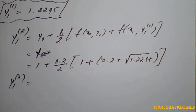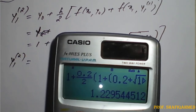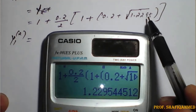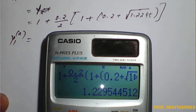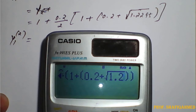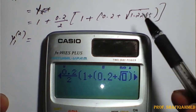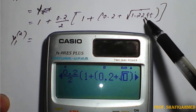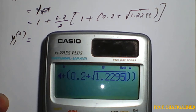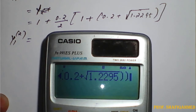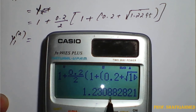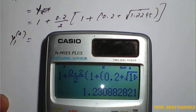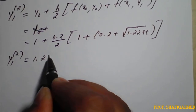Using the calculator with the updated value — replacing √1.2 with √1.2295 — we get 1.23088, which rounds to 1.2309. Therefore the second approximation y1^(2) = 1.2309.